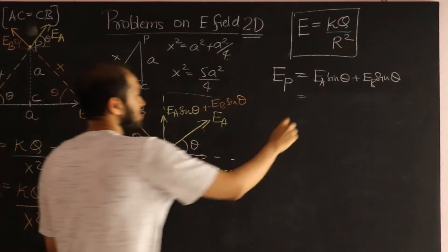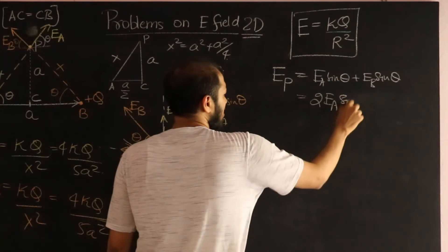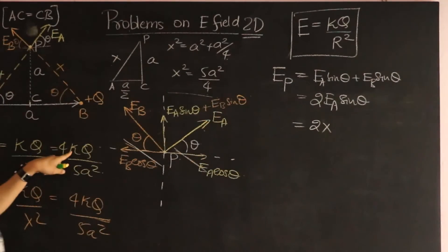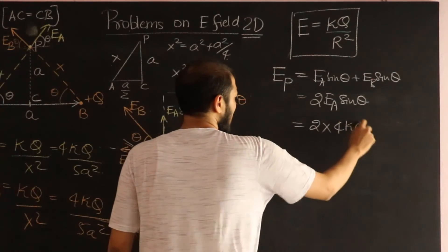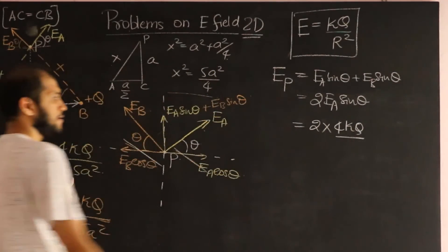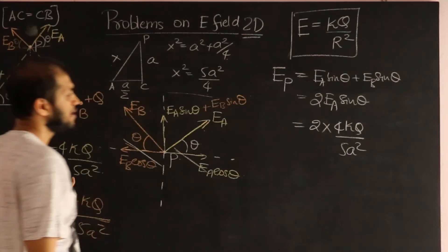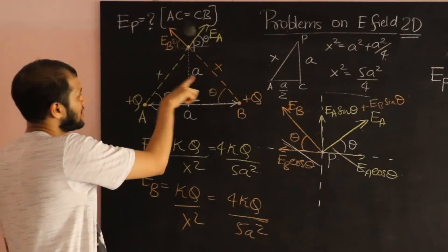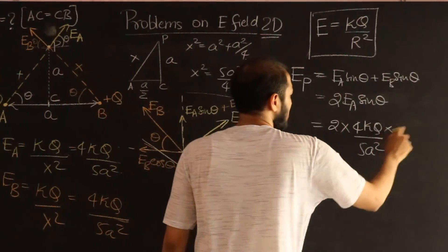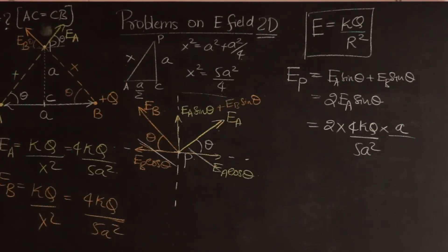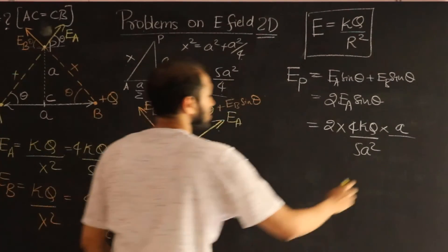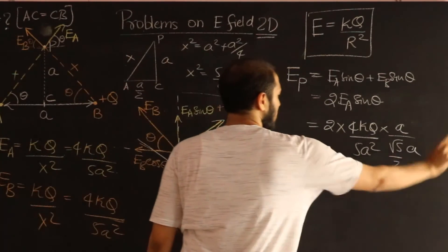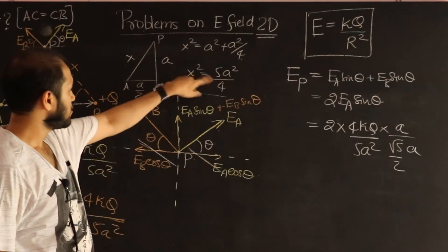It is going to be EA sin theta plus EB sin theta. But EA and EB are equal to each other. So, it's going to be 2EA sin theta. And EA or EB, one of them, is given to us. It's going to be 4KQ divided by 5A squared. And sin theta, let's come back to over here. Look at this triangle. Sin theta is the opposite side divided by the hypotenuse. So, it's the opposite side, A, divided by the hypotenuse is X. But we know what X is. That's the square root of 5 divided by 2 times A.